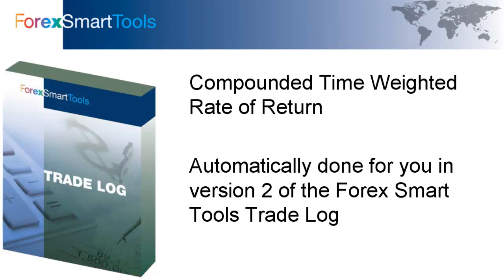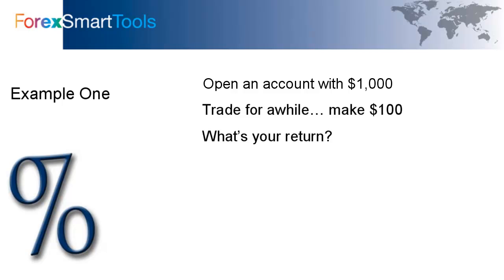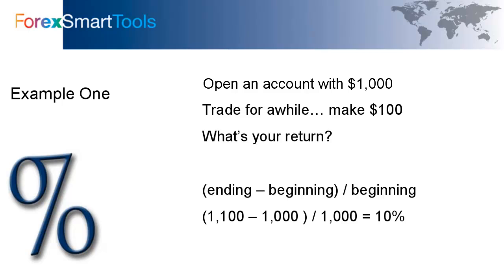Let's begin with a simple example. Let's say we open an account with $1,000, we trade for a while and make $100. What's your return? You simply take the ending value minus the beginning value and divide it by the beginning value. Pretty simple — we have a 10% return.